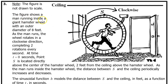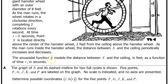The figure shows a man running inside a giant hamster wheel with an outer diameter of 8 feet. As the man runs, the wheel rotates in a clockwise direction, completing two rotations every second. At time t equals 0 seconds, point S is located directly above the center of the hamster wheel, two feet from the ceiling above the hamster wheel. As the man runs inside the hamster wheel, the distance between S and the ceiling periodically increases and decreases. The sinusoidal function h models the distance between S and the ceiling in feet as a function of time t in seconds.